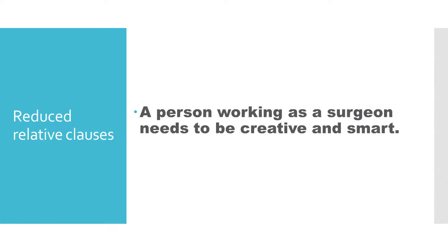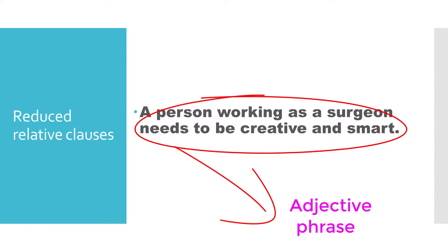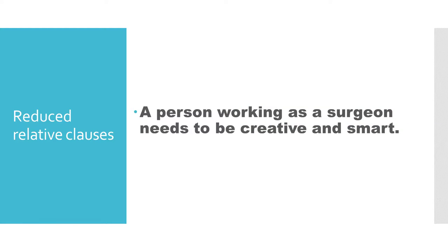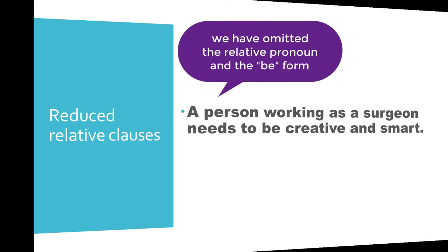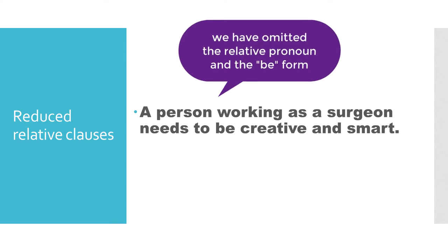Once a relative clause is reduced, it becomes an adjective phrase. It is bound within a noun phrase and defines and describes that noun phrase. For example: 'A person' (noun phrase) 'working as a surgeon' (adjective phrase) 'needs to be creative and smart.' These adjective phrases must come immediately after the noun they are describing. They are not separated by commas or by the noun phrase.